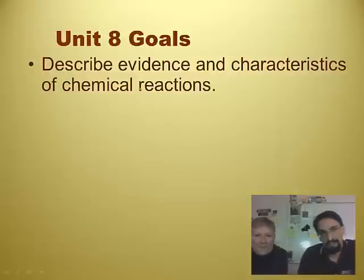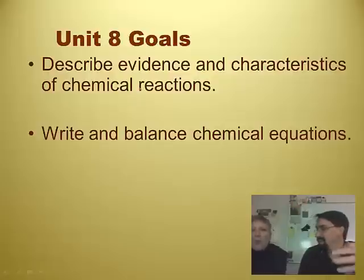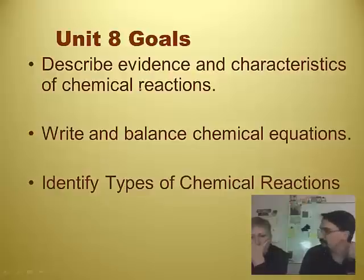Some of the goals that we've got for this new unit, three things. We want you guys to be able to describe evidence and characteristics of chemical reactions. So mostly that stuff that's going to be in this video, the evidence is four hallmarks. We've done that before. We're going to list those again. We'll do that in a second. We want you to be able to write and balance chemical equations. And we also need you to be able to identify types of chemical reactions. It turns out there's five that we talk about.